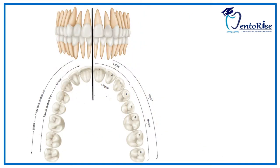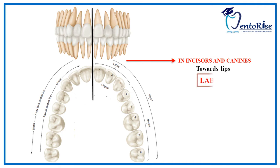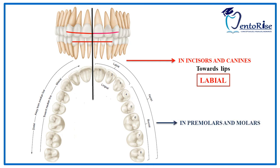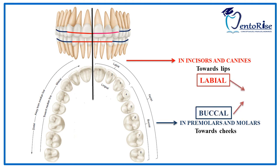Let's talk about the surfaces which face towards the lips and the cheeks. In incisors and canines, the surfaces facing towards the lips are called the labial surfaces, marked in the figure in red. In premolars and molars, the surfaces facing towards the cheeks are called the buccal surfaces, marked in the figure in blue. Together, these labial and buccal surfaces are called facial surfaces.